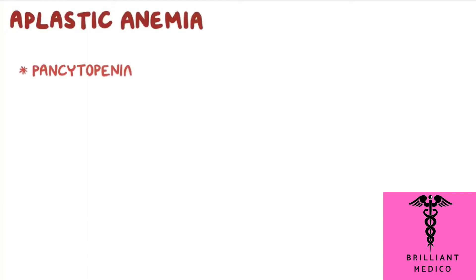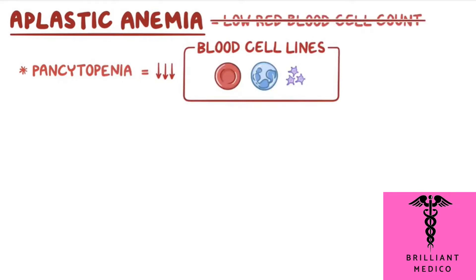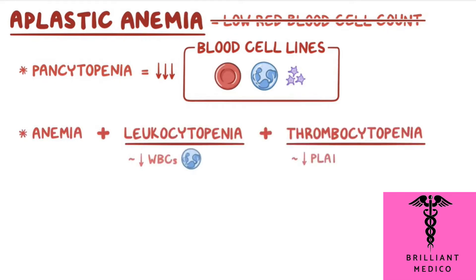Aplastic anemia is a pancytopenia, meaning all blood cell lines are decreased, so the term aplastic anemia, which just refers to low red blood cell count, is actually a misnomer. With aplastic anemia, there's actually anemia, as well as leukocytopenia, or low white blood cells, as well as thrombocytopenia, or low platelet levels. This condition takes many forms, ranging from mild to severe, depending on the cause.